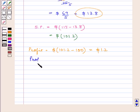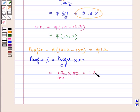So, as profit percent is equal to profit upon cost price into 100, therefore, profit percent is equal to 1.2 upon 100 into 100, which is equal to 1.2 percent.